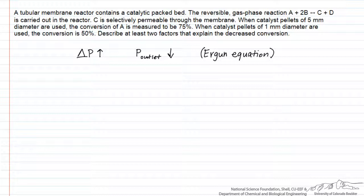Let's talk about some effects that this decreased pressure in the reactor will have. For one thing, we normally expect that the forward reaction rate is going to be proportional in some way to the pressure of the reactants — the pressure of A to the alpha and the pressure of B to the beta power. So if we're decreasing the total pressure, we're going to also decrease the partial pressure of those reactants, and that will decrease the forward rate so that we might get a lower conversion.